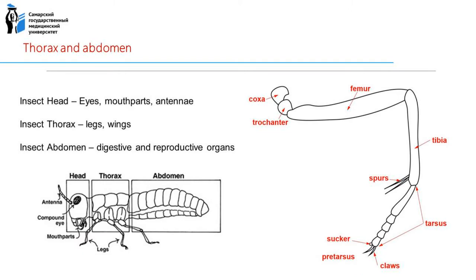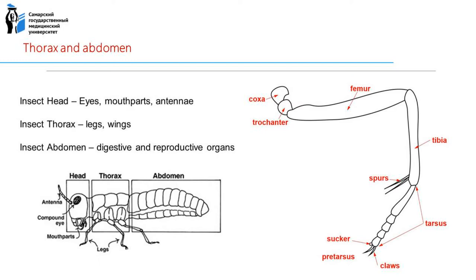Each thorax segment has a pair of legs, so insects have three pairs of legs total. Legs consist of coxa, trochanter, femur, tibia, tarsus, and pretarsus; the tarsus consists of three to five segments. Most insects have two pairs of wings. There are also primary or secondary wingless insects — examples of secondary wingless insects are fleas and lice. Flies have only one pair of wings, with the second pair reduced. The wing consists of cells and veins; the morphology of the venation is an important taxonomic character.